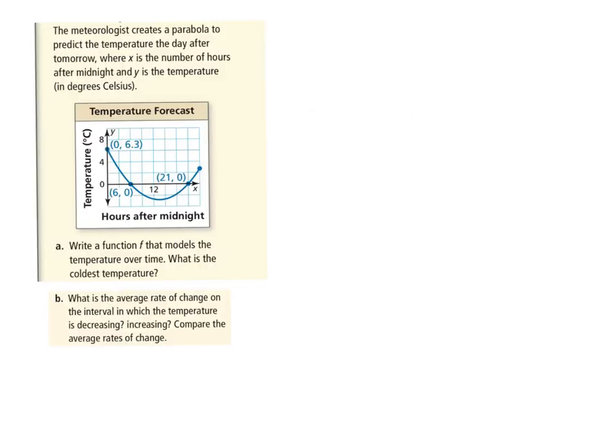Here's our next problem. A meteorologist creates a parabola to predict the temperature the day after tomorrow, where x is the number of hours after midnight and y is the temperature in degrees Celsius. Write a function f that models the temperature over time. What is the coldest temperature? So first write the function, then we'll evaluate it.